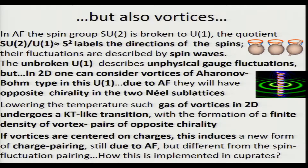Now imagine that these vortices are centered on charges. Then this binding of vortex and anti-vortex pairs will induce a new form of charge pairing. It is still due to anti-ferromagnetism, but of course it's different from spin fluctuation pairing. Now let me show how this general idea is implemented in the cuprates.